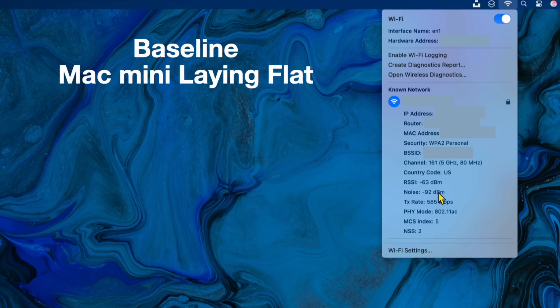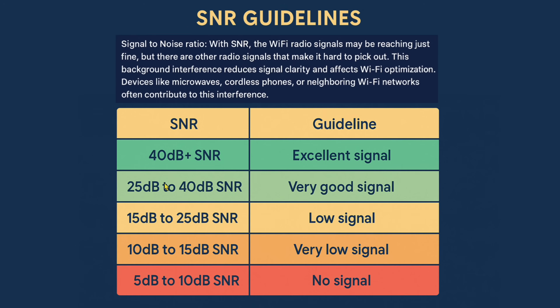To get the SNR value, all you do is take the difference between the two numbers. At baseline: RSSI is negative 63 and noise is negative 92, so the difference is 29. You just find the difference between those two negative numbers — in this case 92 minus 63 equals 29. Looking at the SNR chart, 29 puts me in the very good signal range.